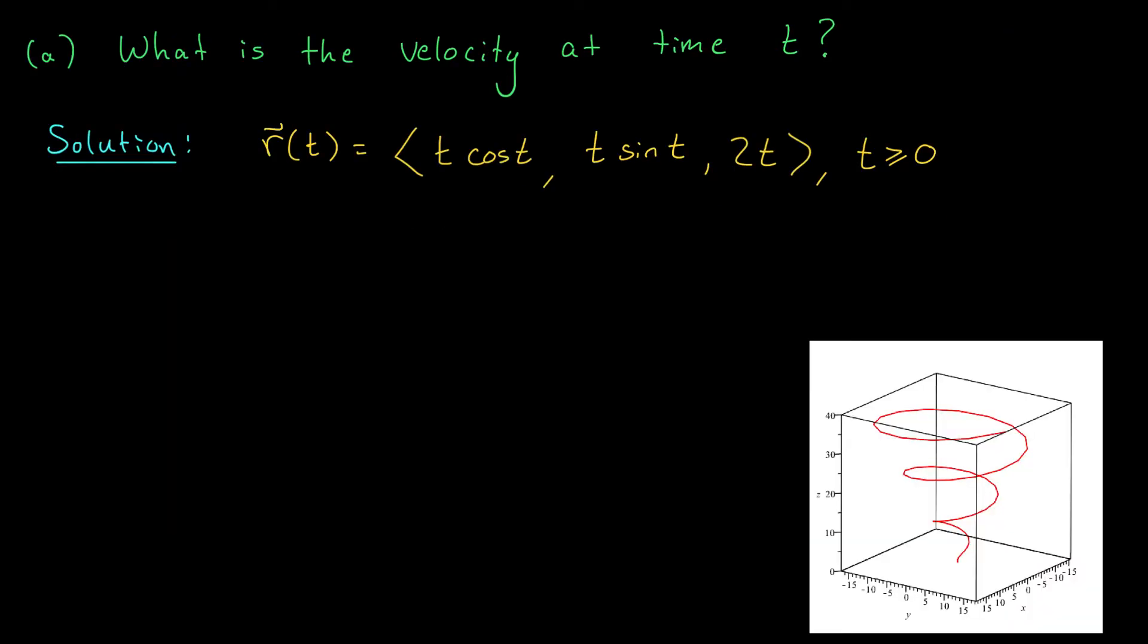All right, so in part a, we're looking for the cow's velocity at some time t seconds. Well, in the question, we were given r of t, the cow's position at time t. Its coordinates are t cos t, t sine t, and 2t. Down here, I've actually plotted the cow's path as it flies through this tornado. Now, if we want the cow's velocity, well, velocity is the rate of change of position, right? So the velocity is the derivative of r of t. It's r prime t.